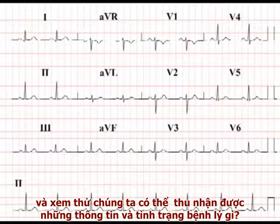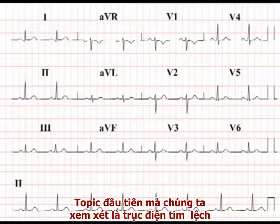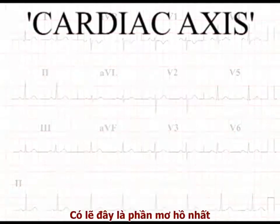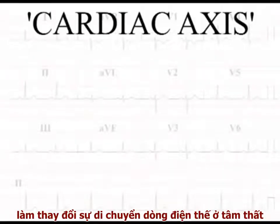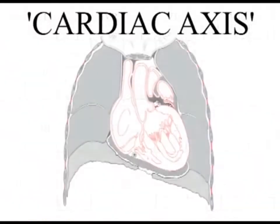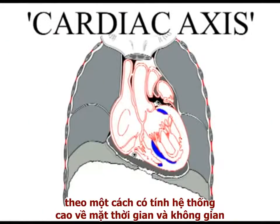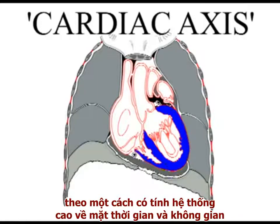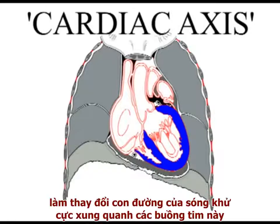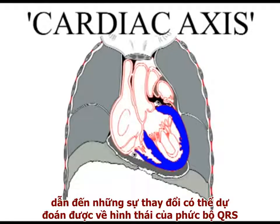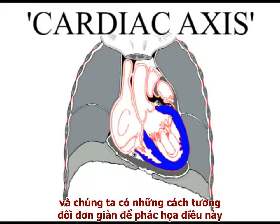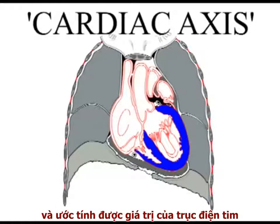Now let's start to put the ECG to use and see what information we can extract in disease situations. The first topic we will deal with is deviation of the cardiac axis, which is perhaps the most abstract and concerns disease processes which alter the pattern of spread of depolarization around the ventricles. Cardiac depolarization travels through the ventricles in a highly organized temporal and spatial pattern, and many common diseases alter the pattern of flow of depolarization around the chambers. Such alterations result in predictable changes in the morphology of the QRS complexes, and a relatively simple way of characterizing this is to estimate the position of the cardiac axis.